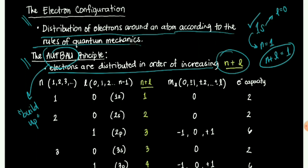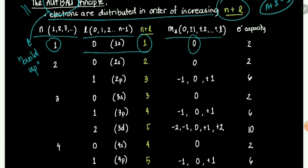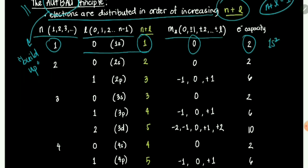Here is the list of all the quantum numbers and the available subshells for the electrons to fill up. For n equals 1, we only have one subshell, which is 1s. The n plus l for this is 1, the m sub l is 0, and you can put a maximum of 2 electrons in 1s. Therefore, we have 1s2. Next is 2s — for 2s, we have n plus l equals 2, and we can put 2 electrons maximum. So we have 2s2.